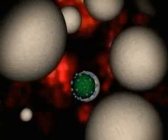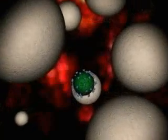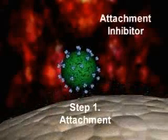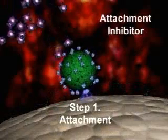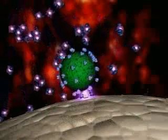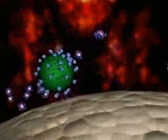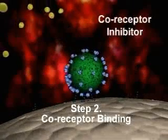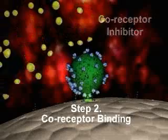HIV replication is a complex multi-stage process that includes crucial steps taking place on the exterior as well as the interior of the target host cell. The first three steps involved in cell entry are termed attachment, co-receptor binding, and fusion. Each step in the process is critical to successful viral reproduction and represents a potential target for antiviral drug development.